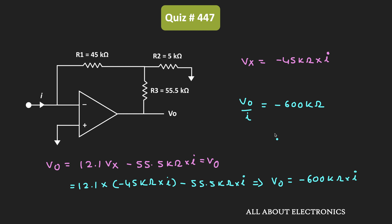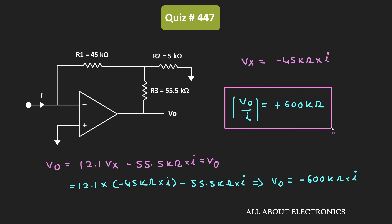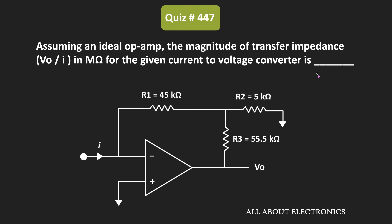We have been asked to find the magnitude of the transfer impedance, so considering the magnitude, it is equal to 600 kΩ. Therefore, the magnitude of the transfer impedance for this current to voltage converter is 600 kΩ, or equivalently, 0.6 MΩ. The answer to this question is 0.6 MΩ.